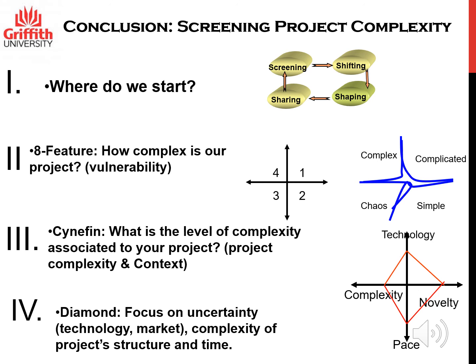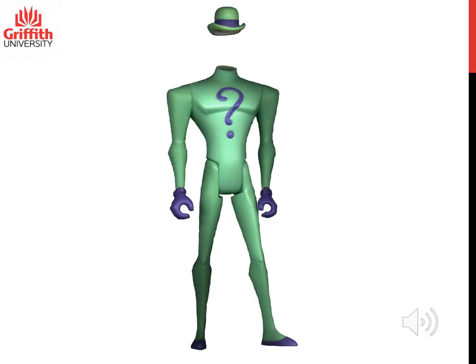The A-Fiction model will help us know the level of complexity and vulnerability of our project, and is mostly useful for organizational-type projects. The Cognitive model will also help us know the level of complexity associated with our project, connecting it to the type of context in which our project is developed, since context significantly affects project complexity. Finally, the Diamond model focuses on uncertainty of technology and market, as well as the actual organization, scope, structural complexity, and time aspects of the project. Please write down your questions so we can discuss them during our face-to-face workshops or collaborative sessions.